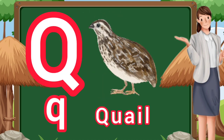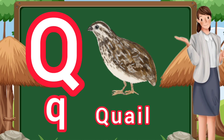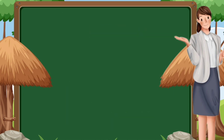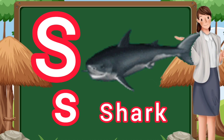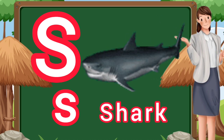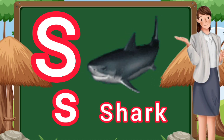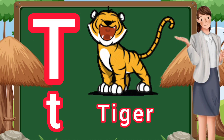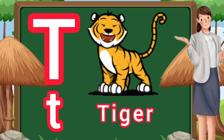Q. Q for quail. R. R for room. S. S for shark. T. T for tiger.